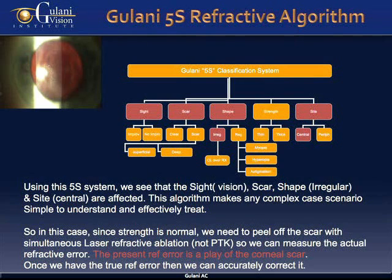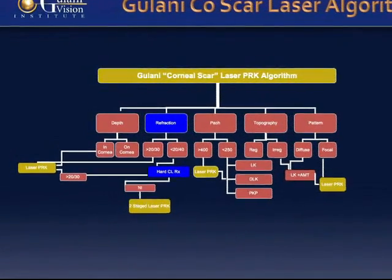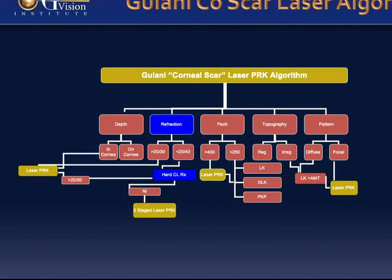Laser or direct laser and straight reshaping to vision — the refraction is the mainstay of the corneal scar algorithm, where vision better than 20/30 suggests straight laser PRK, while less than 20/40 following a hard contact lens trial can determine staged laser in two stages: a scar peel followed by myopic laser ablation.